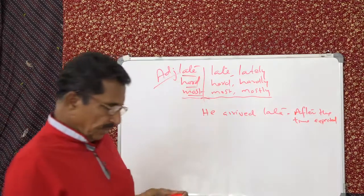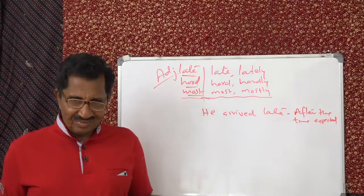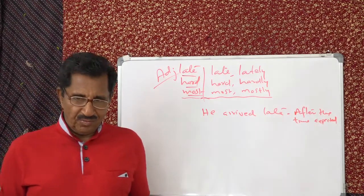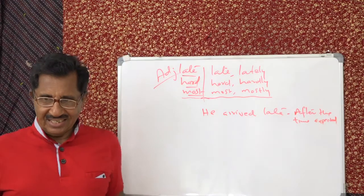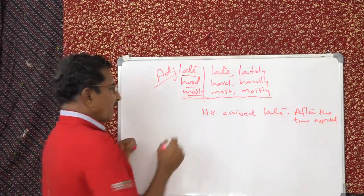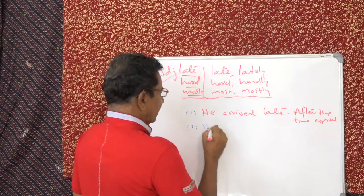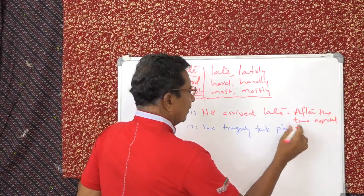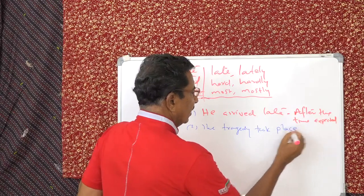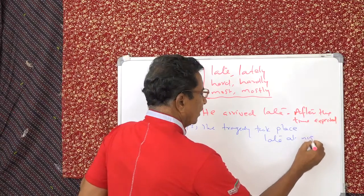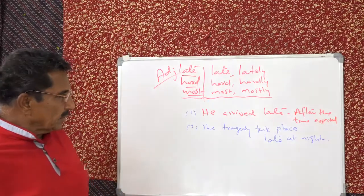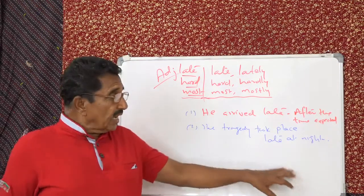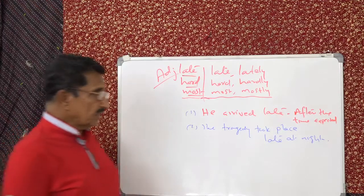The meeting, your school meeting has started at what time? 10 am. But it started at 12. So that is late. And look at this example. The tragedy took place late at night. Now what does that mean? That means the time specified is night, but late at night means towards the end of the specified time.